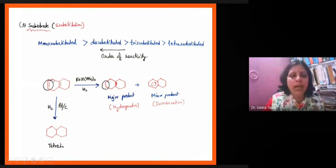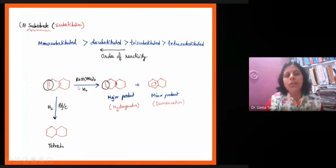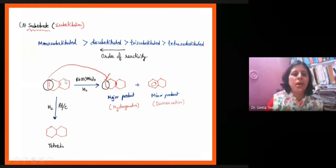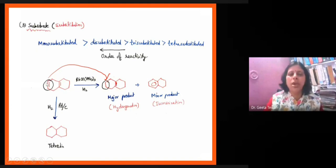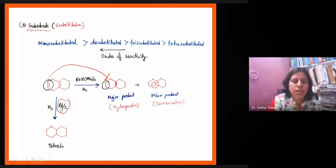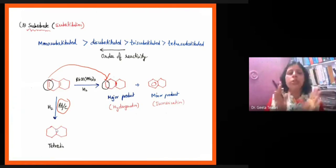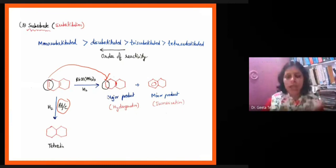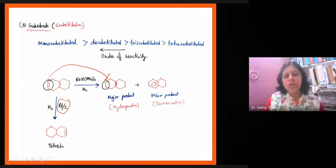For a molecule with two double bonds — one more substituted and one less substituted — in the presence of Wilkinson catalyst, the less substituted double bond is hydrogenated preferentially as the major product; the more substituted double bond gives only a minor product. This is because Wilkinson catalyst is selective towards less hindered double bonds. In the presence of heterogeneous catalysts, more substituted double bonds tend to be hydrogenated. This selectivity is a very important aspect — homogeneous catalysts preferentially hydrogenate less substituted double bonds.